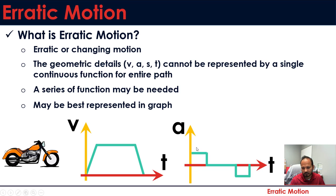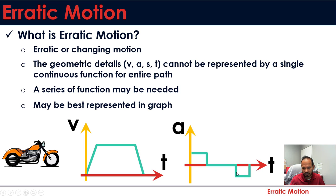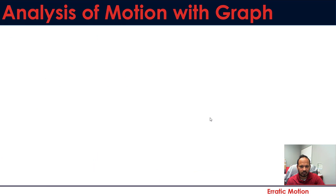Similarly, for acceleration, you see there are three different changes: first constant acceleration, then there was constant velocity so the acceleration was zero, and then there was deceleration — constant deceleration. So this is what erratic motion is.